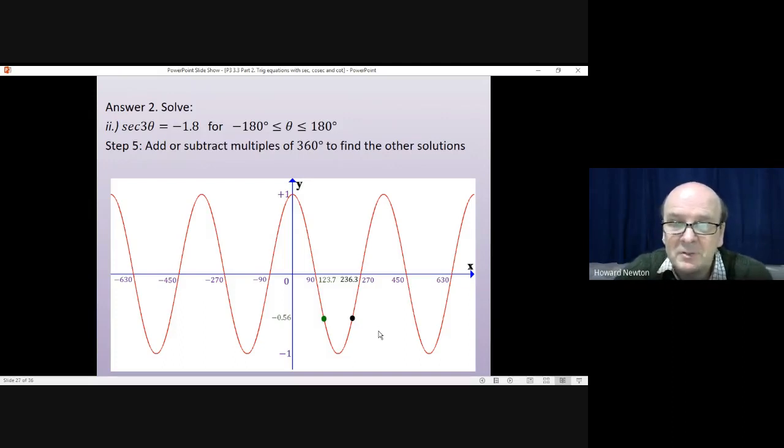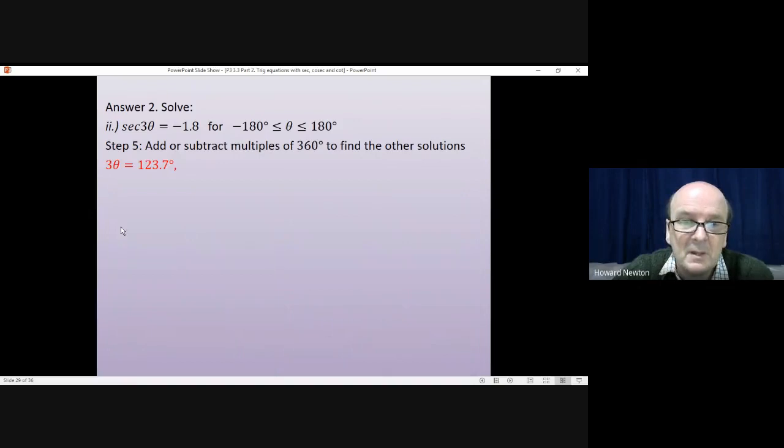Finally, we add or subtract multiples of 360 to find all of the other solutions. And all the other solutions are the crossing points which are at this same height of minus 0.56. So that's where they would occur. The green ones are all 360 degrees apart from each other. The black ones are all 360 degrees apart from each other. So we need to find them in two halves. The green ones first. The first green one we found was using the calculator. 123.7 degrees. Adding on multiples of 360 will give me that and then that. Taking away multiples of 360 will give me that and then that.